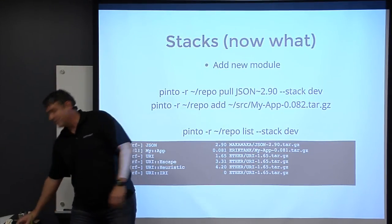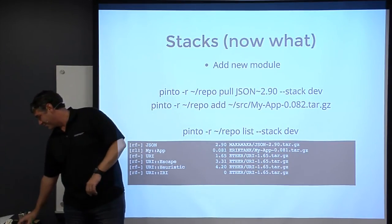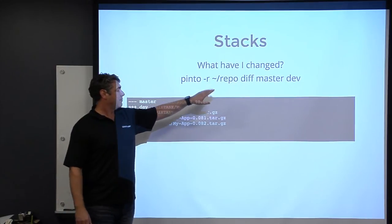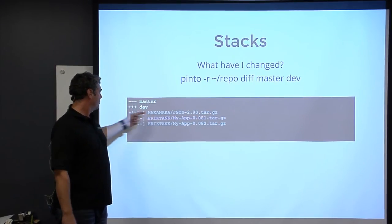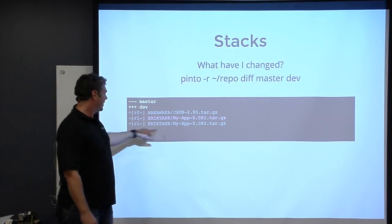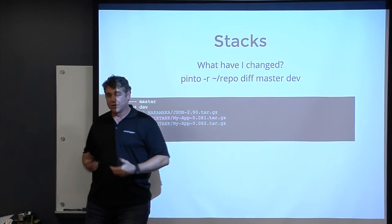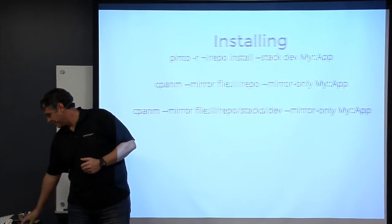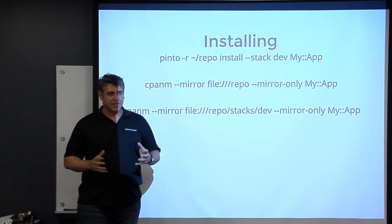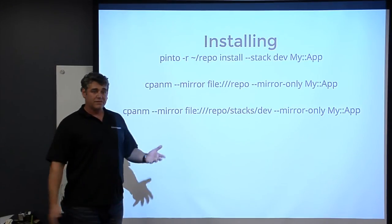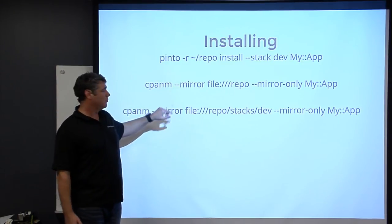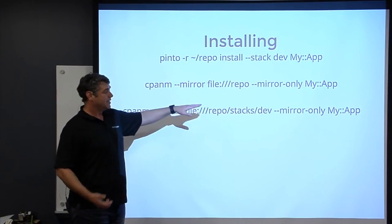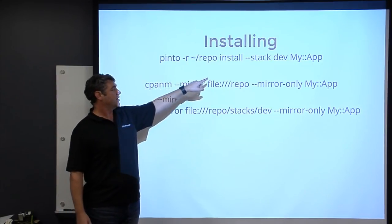Once you've done a list on your dev stack you can see the version of JSON you wanted and the updated version of your module. To see what you've actually changed between stacks, you can do a diff: 'pinto diff master dev' - it shows that we added JSON 2.0, removed 0.081, and added my-app version two. That's a good way to check what you've done after a long weekend or a couple of weeks of work.